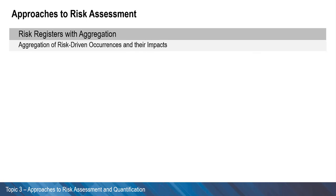The second approach is aggregation of risk-driven occurrences and their impacts. In this approach, the underlying nature of the risk is captured — meaning whether the risk happens or not. In general, simulation techniques would typically be required to capture the various combinations that may materialize. In such cases, while capturing the random risk occurrence, one may also wish to reflect that the impact of each item could be an uncertain figure drawn from a range of possible values.